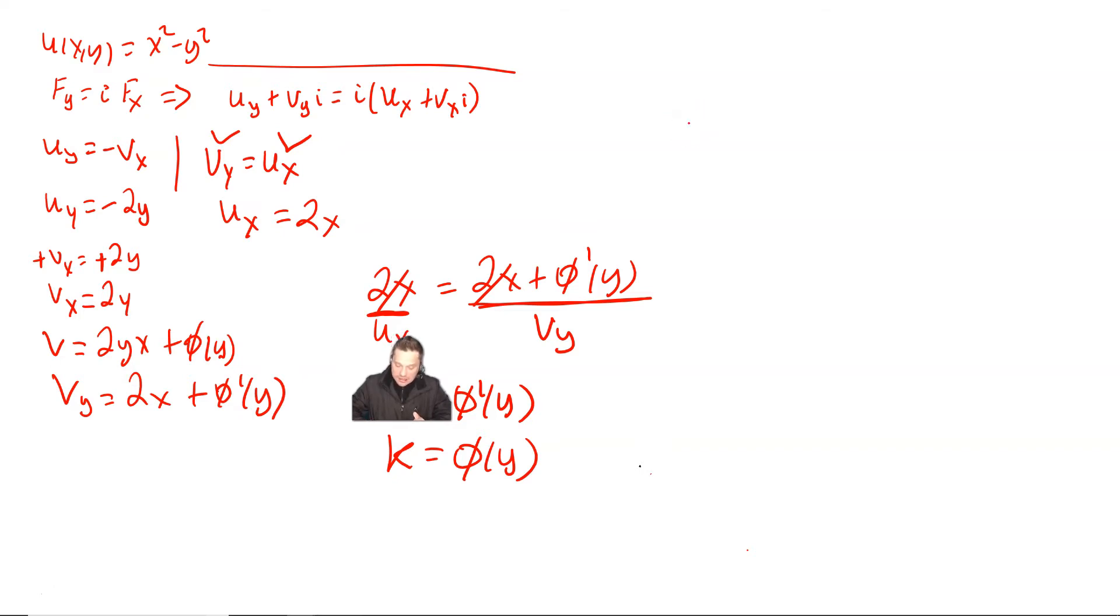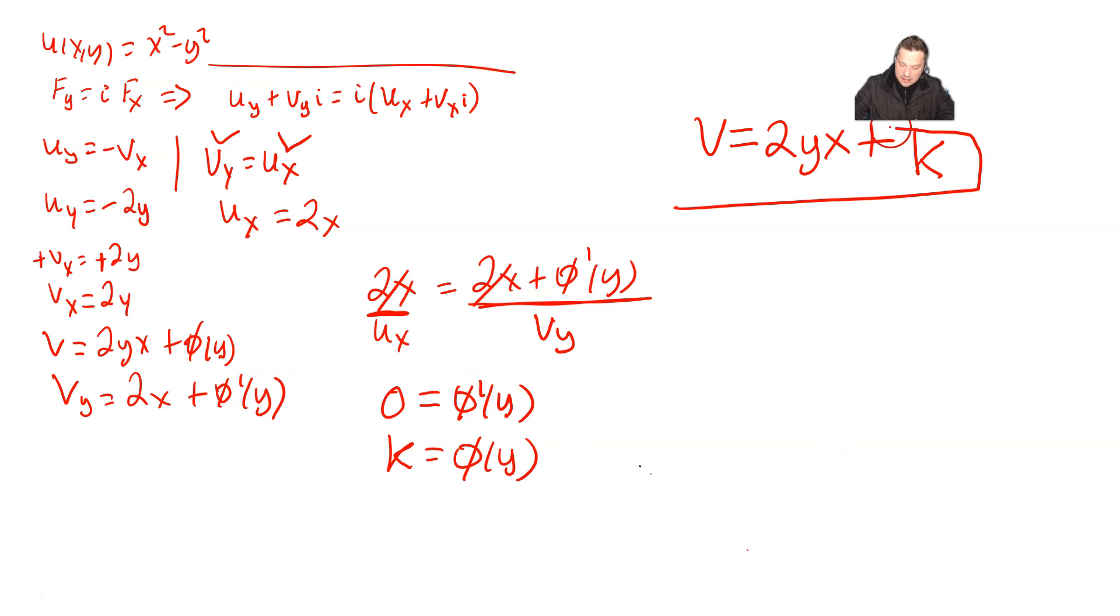So putting all of these pieces together, we can now essentially write down the following as the answer: v is equal to 2yx plus, and then notice that phi of y is k. So for that reason, over here, I'm going to put k, so plus k right here. And then this is the harmonic conjugate that we've been looking for, 2yx plus k. And that's it.